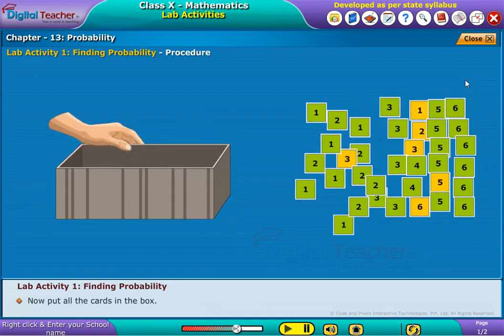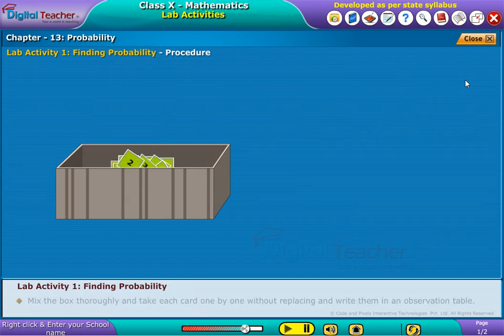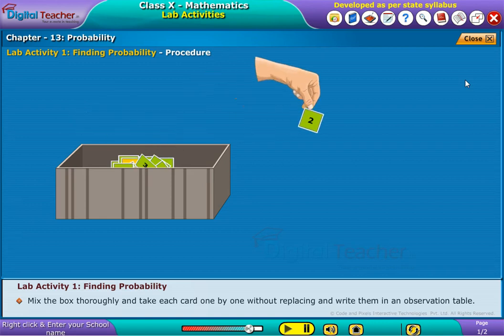Now put all the cards in the box. Mix the box thoroughly and take each card one by one without replacing and write them in an observation table.